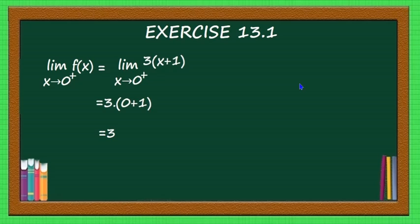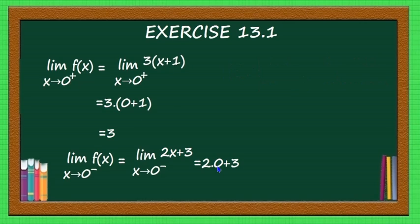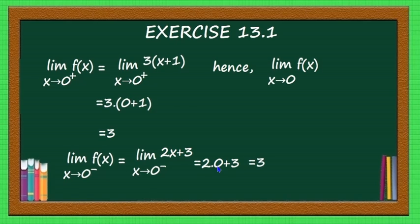Similarly, let us find limit extending to 0 minus of f(x). That is equal to limit extending to 0 minus of 2x plus 3, because f(x) is equal to 2x plus 3 when x is less than or equal to 0. Here 0 minus means less than 0, that is why you take 2x plus 3. That is equal to 2 into 0 plus 3, which is equal to 3. Since the limit from 0 plus and limit from 0 minus are both 3, limit extending to 0 of f(x) is equal to 3. That is the first part of the question.